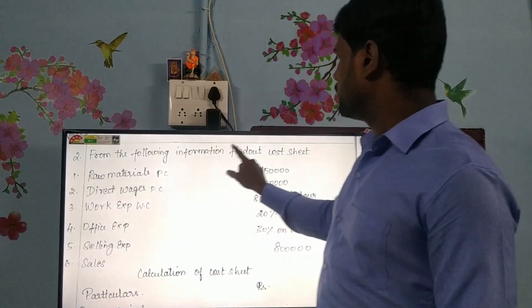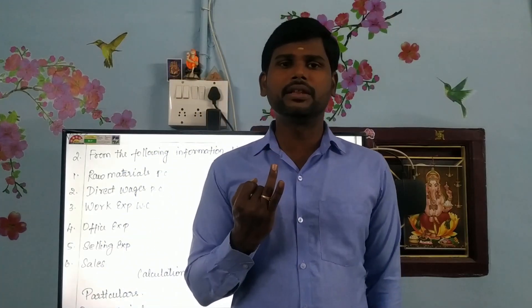Now, if you are looking at a cost sheet, there are 5 stages. First, prime cost — prime cost is for product manufacturing. Second, works overhead — that is factory or manufacturing overhead. Third, office overhead — that is office or administration overhead, which covers office-level expenses.